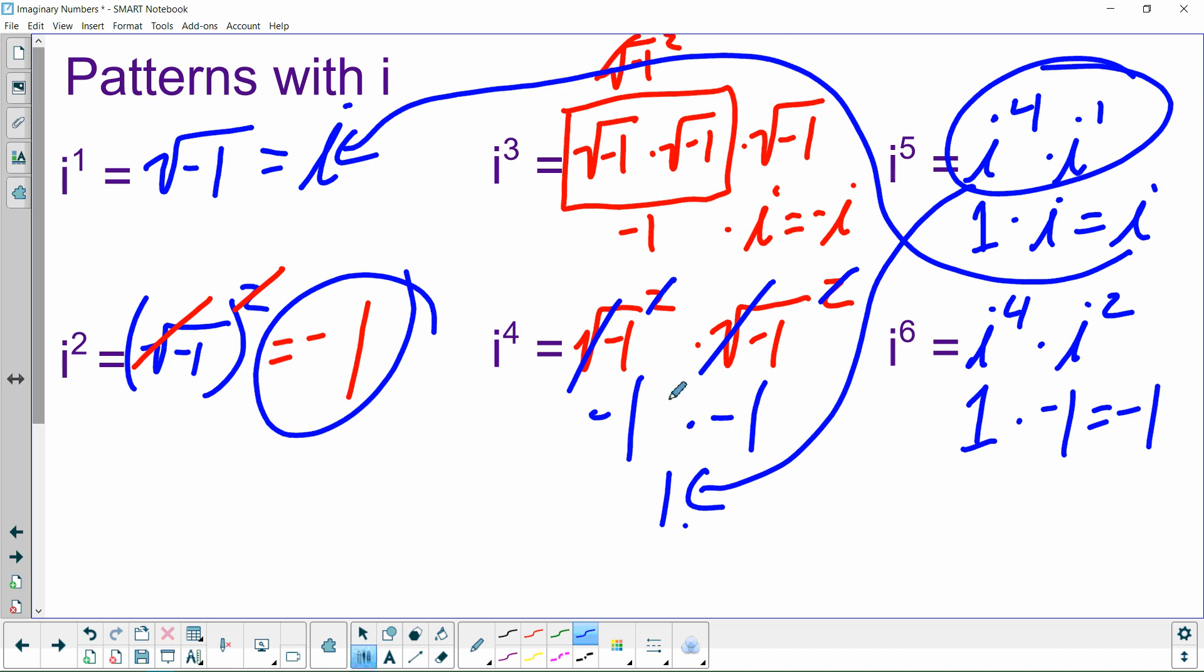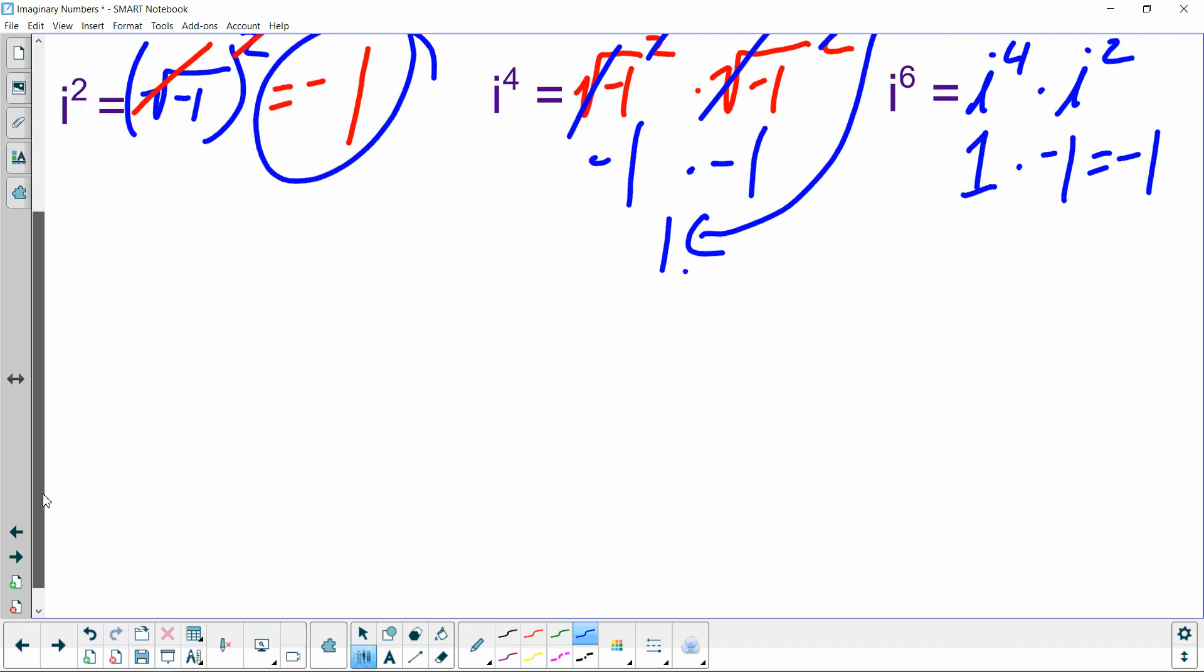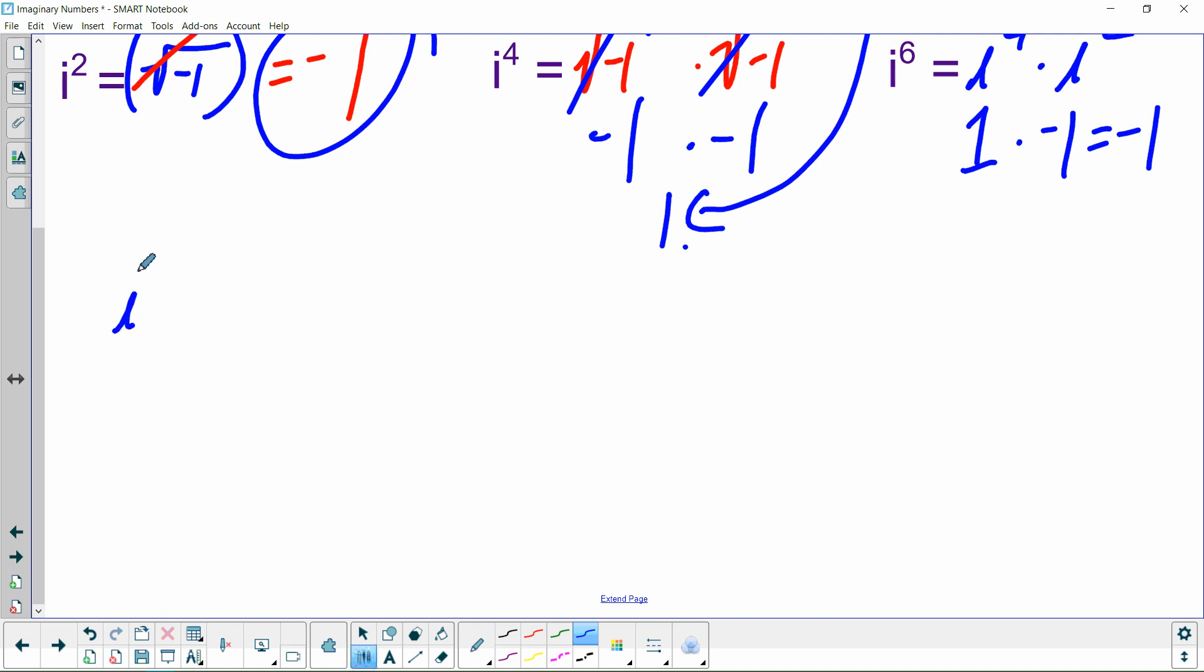So you really just need to memorize these first four or at least be able to remember this process to figure it out. But you should have the first four memorized. i equals square root of negative one. It's i, whatever. You know what I mean. i squared is negative one. i to the third is negative i. And then i to the fourth is positive one. And if you have these four memorized, you're probably good until you go to college. Wonderful.